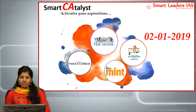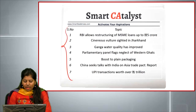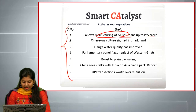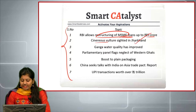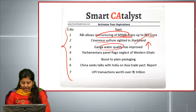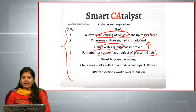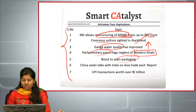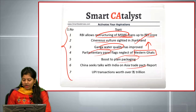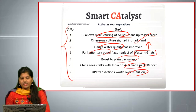Welcome to Smart Current Affairs, January 2, 2019. Today we are going to cover seven articles: RBI allows the restructuring of MSME loans up to 25 crore, Cinereous vulture cited in Jharkhand, Ganga water quality has improved, parliamentary panel flags neglect of Western Ghats, boost to plain packaging for tobacco products, China seeks stocks with India on Asia trade pact, and UPI transactions worth over 1 trillion.